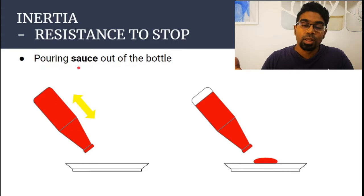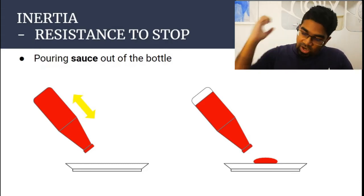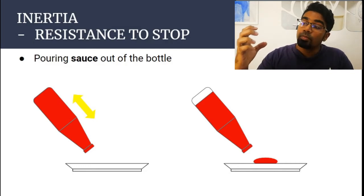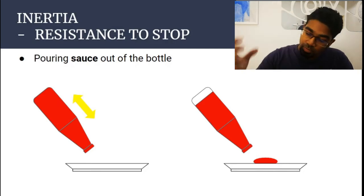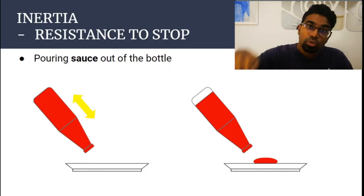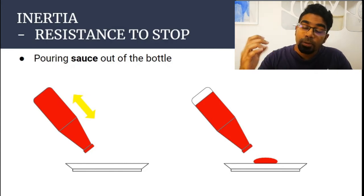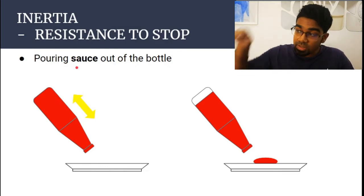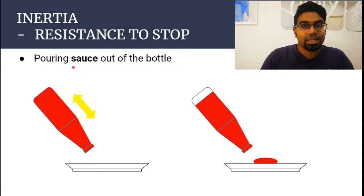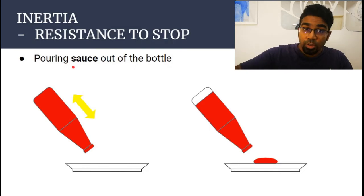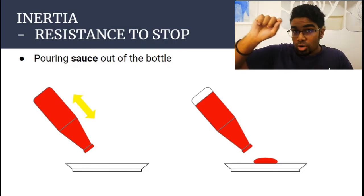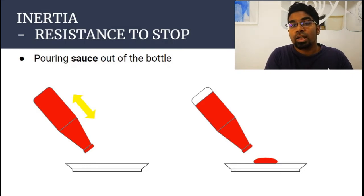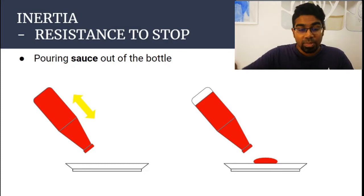Another everyday example is getting sauce out of a bottle. When you shake the bottle forward and then stop it, both the bottle and sauce are moving forward — but when you stop the bottle, the sauce wants to continue its state of motion and comes out. The same applies to drying an umbrella: when you spin it and then stop it, the water droplets continue moving because of inertia, flying off and drying the umbrella.